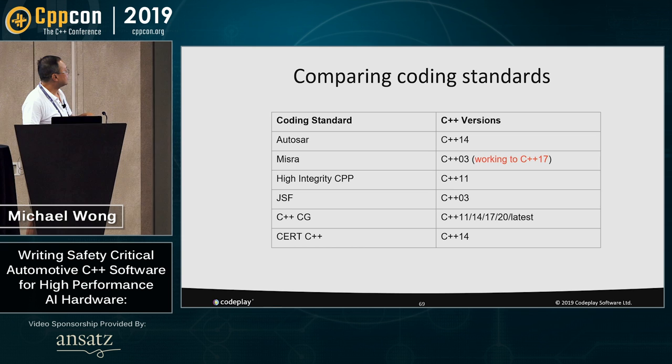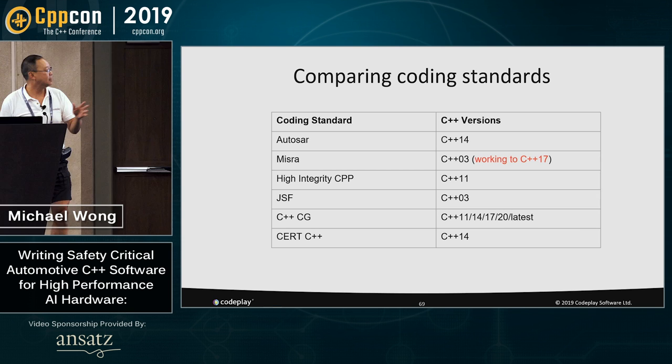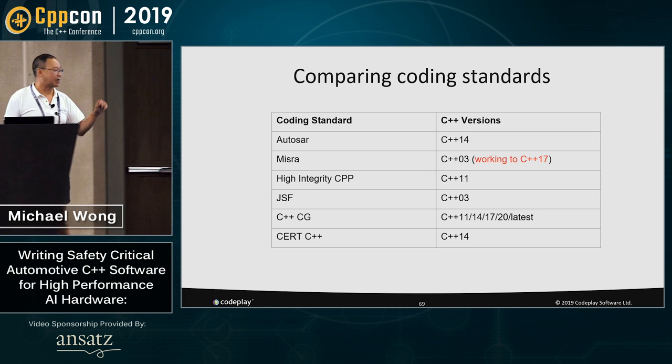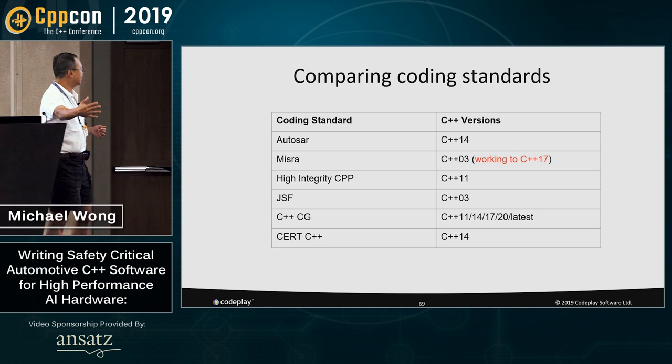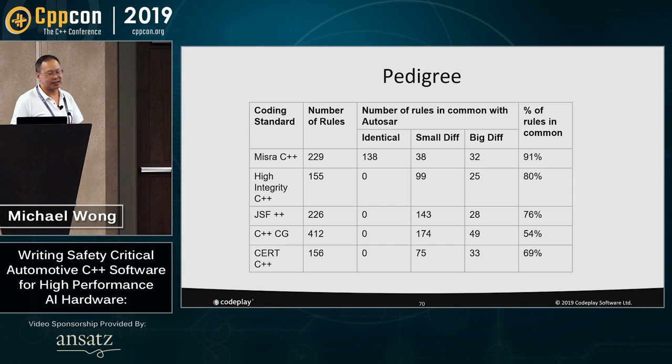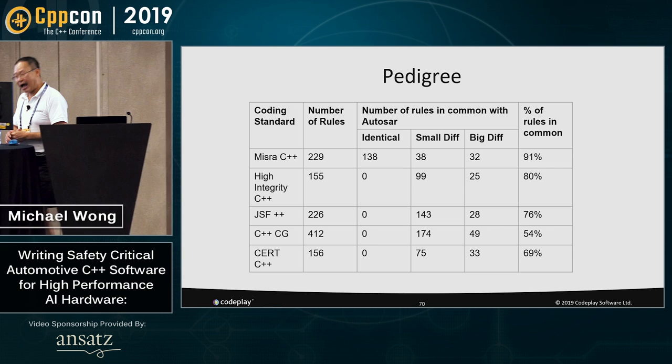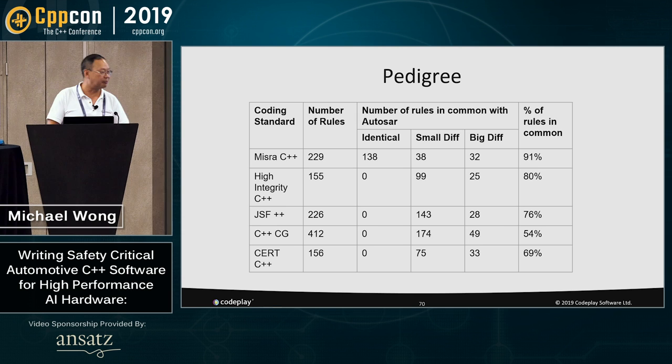Comparing the coding standards: AutoSAR stopped at C++14, MISRA stopped at C++03, High Integrity stopped at C++11, JSF was at C++03, Core Guidelines is constantly moving with the latest, and CERT stopped at C++14. If you look across these, they're actually more similar than dissimilar — a lot of these have rules in common, and they constantly refer to each other. One thing I want to discuss is: why does MISRA 2018, which is based on C++03, still forbid dynamic memory?